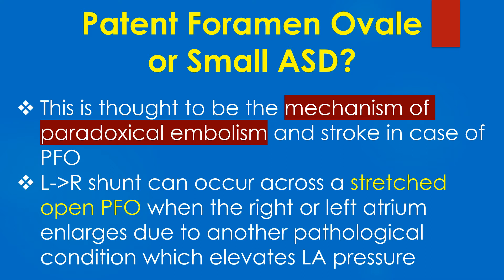Left to right shunt can occur across a stretched open PFO when the right or left atrium enlarges due to another pathological condition which elevates the left atrial pressure.